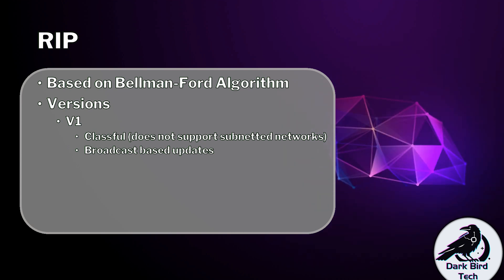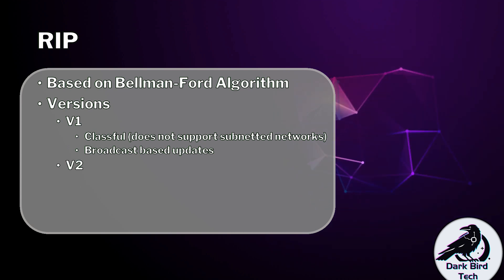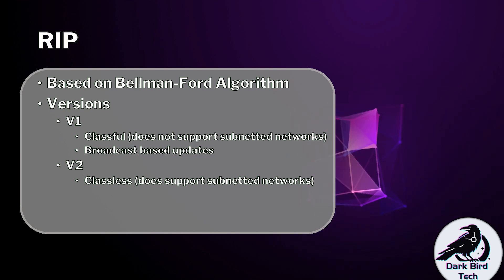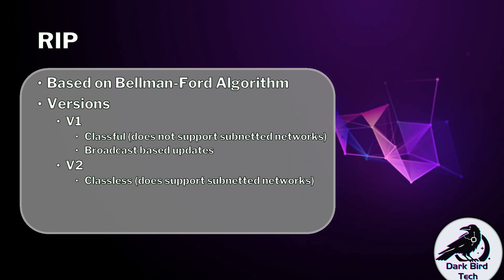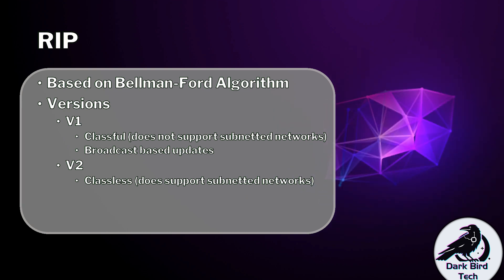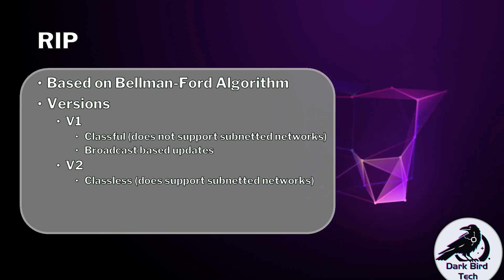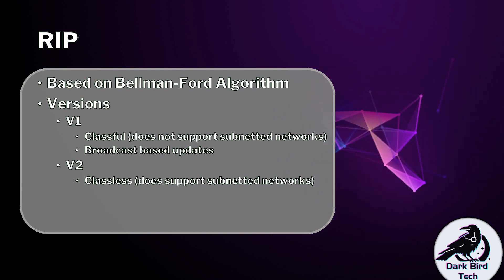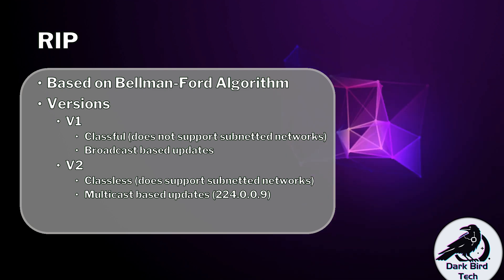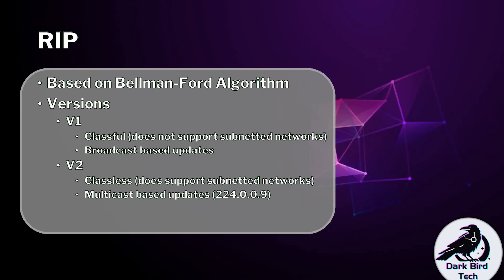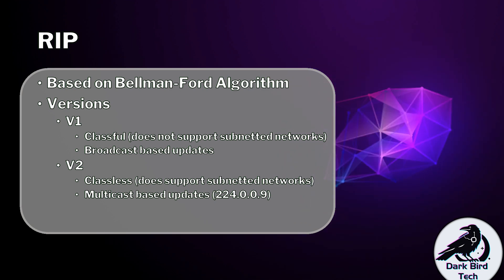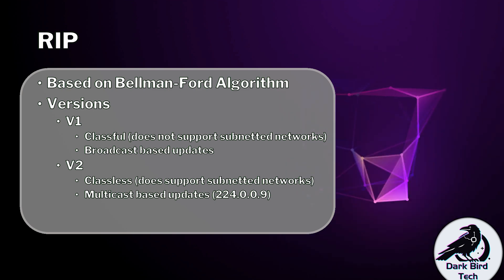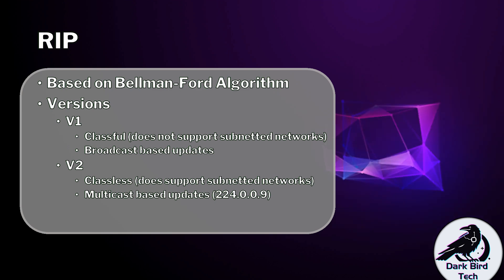If you're going to use RIP, go for version 2. Version 2 is classless, meaning it does share subnet mask information. If you've subnetted a network like 10.1.2.0 with a slash-24 mask, it will tell the neighboring router this is a slash-24 network. Version 2 also multicasts the routing table updates using the 224.0.0.9 IP address, so only routers running RIP pay attention to that traffic.